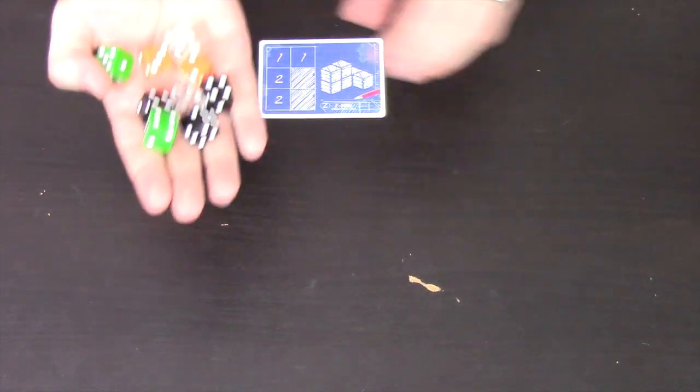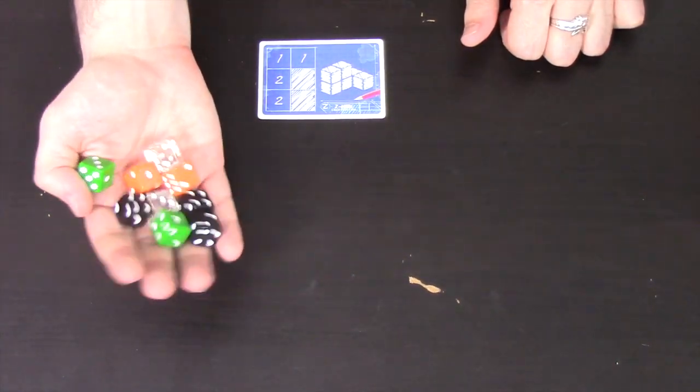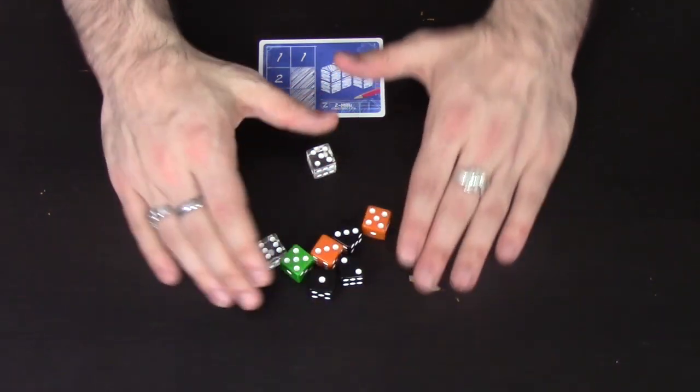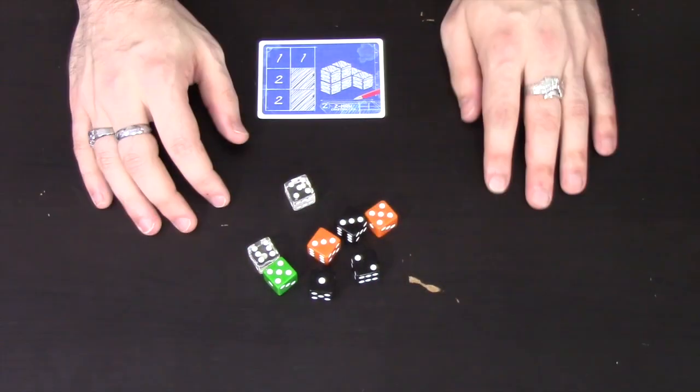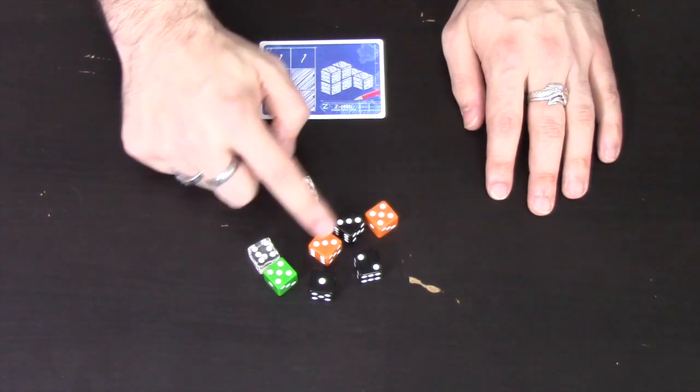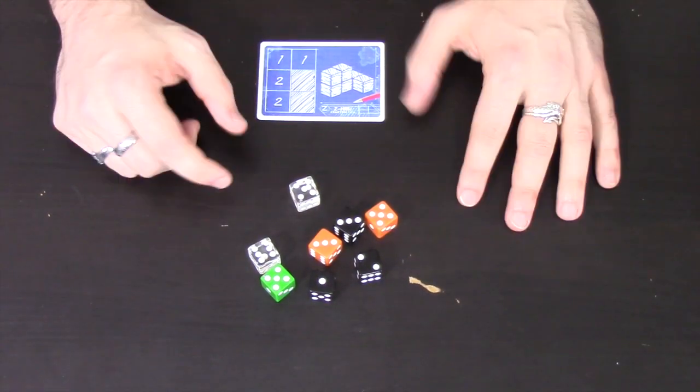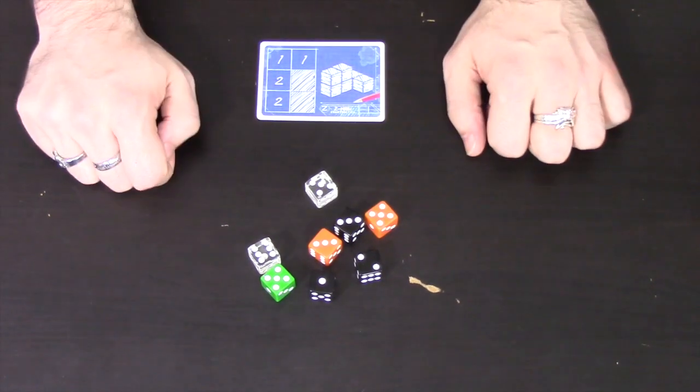To start each round, there are going to be some dice in the middle tank. So in a three player game, there are going to be eight dice, and the number of dice depends on how many players there are. And the start player's going to roll these dice. And you can see here that I've got a one, two, three in black, a three, five in orange, a five in green, and a five or a six in white. So on my turn, I'm going to take one of these dice and I'm going to add it to my Blueprint.